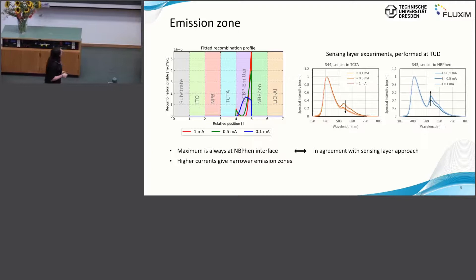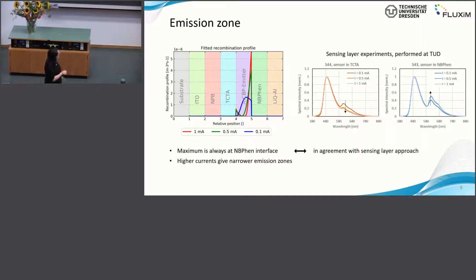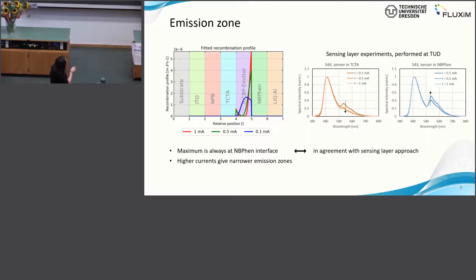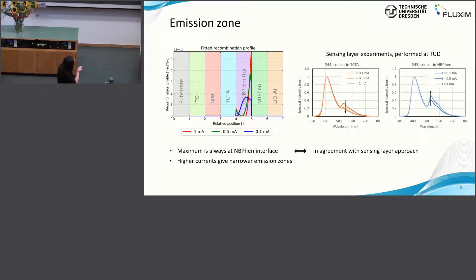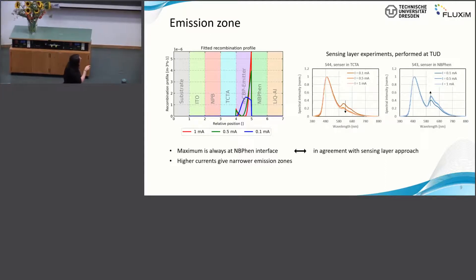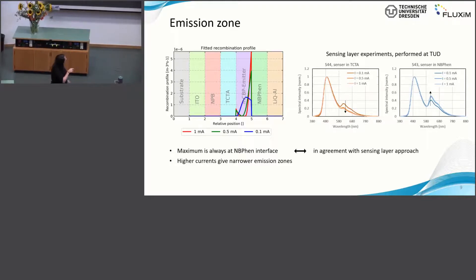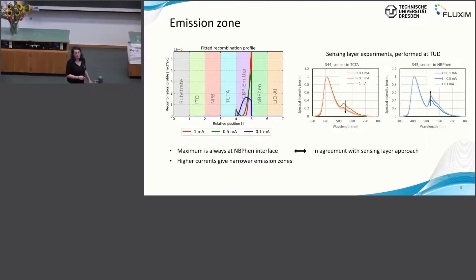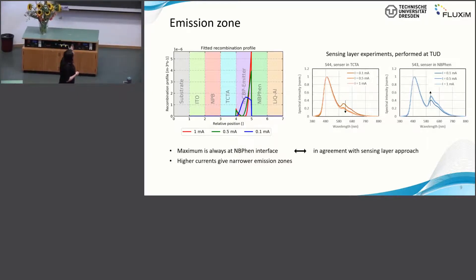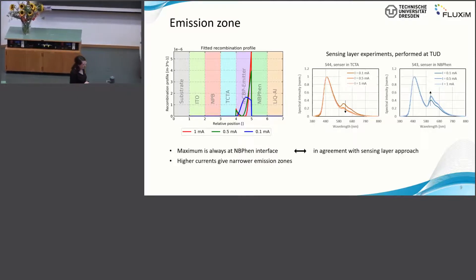Theo Dresden also fabricated some sensing layer devices. They just put in the first five nanometer of this TCTA or in the first five nanometer of the NB-FAN, they put some sensitizer, iridium complex. And this is this peak here. Here is the emitter, the sensor in the TCTA. You can still see a signal and it actually decreases with increasing current density. This is what you can see here. With increasing current density, you get more emission from this side. On the other hand, if they put the sensor in the NB-FAN layer, they get an increase in signal from this sensitizer. This is also what we qualitatively see here. So our fitting is in very nice agreement with the sensing layer approach.